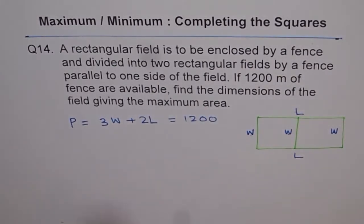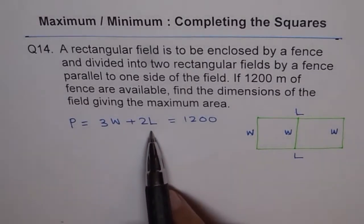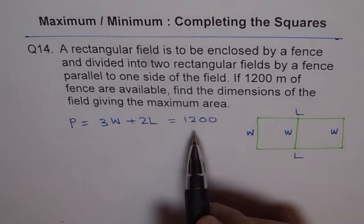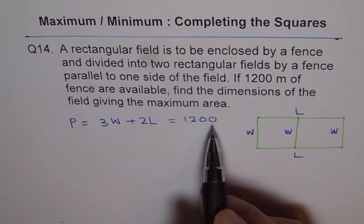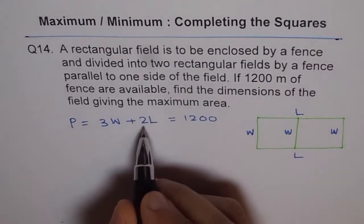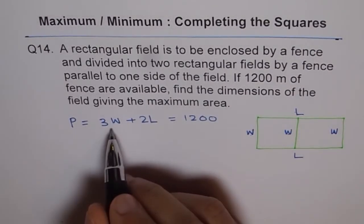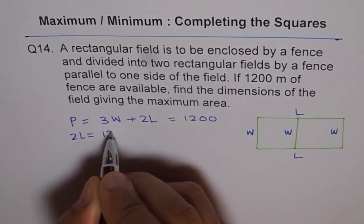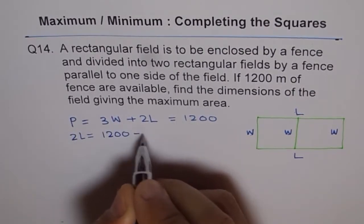Now, this particular equation helps us to write one variable in terms of another. So that is how this equation helps, and let's do that. So we'll write one of the variable in terms of the other. So we can write L, for example, in terms of W.